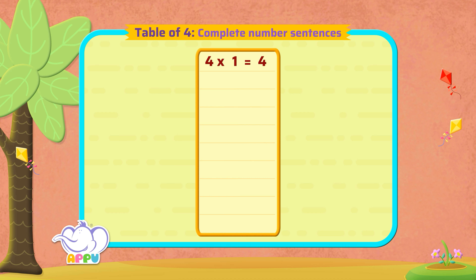What is four times two? We have to skip count by four two times. So the answer is eight.